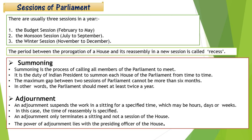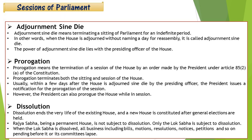The power of adjournment lies with the presiding officer of the house. Next is adjournment sine die, which means Parliament terminates the sitting for an indefinite period — no specific time or day is mentioned for when the assembly will sit again. This power also lies with the presiding officer. Prorogation is the termination of a session of the house by an order made by the President under Article 85(2) of the Constitution. Prorogation terminates both sitting and session of the house.